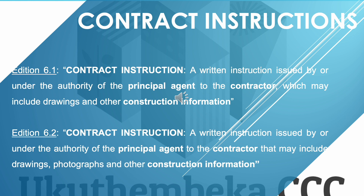For contract instructions: Edition 6.1 defined it as 'a written instruction issued by or under the authority of the principal agent to the contractor, which may include drawings and other construction information.' Edition 6.2 changed this to 'the written instruction issued by or under the authority of the principal agent to the contractor, that may include drawings, photographs, and other construction information.' Photographs have been expressly added.